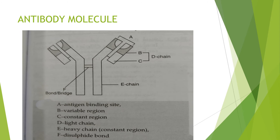In this diagram you can see the Y-shaped structure. At the tips are the antigen binding sites — the region where the foreign molecule, the antigen, binds. Different regions are labeled, and the chains are linked by disulfide linkages, also called disulfide bonds.